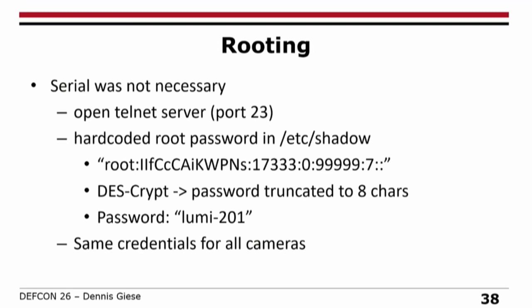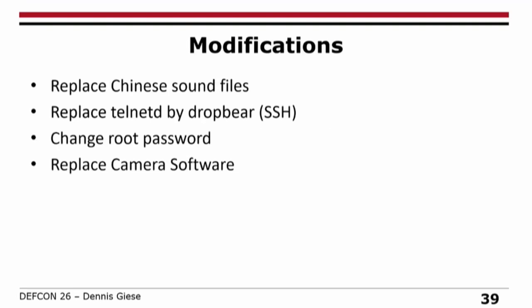I reported that to Xiaomi, but they didn't really respond — or they responded, but yeah, never mind. Speaking of modifications: first thing you can do is replace the Chinese sound files so it speaks English. You can replace Telnet through Dropbear, and of course you want to change the root password. Sometimes you even want to replace the camera software.